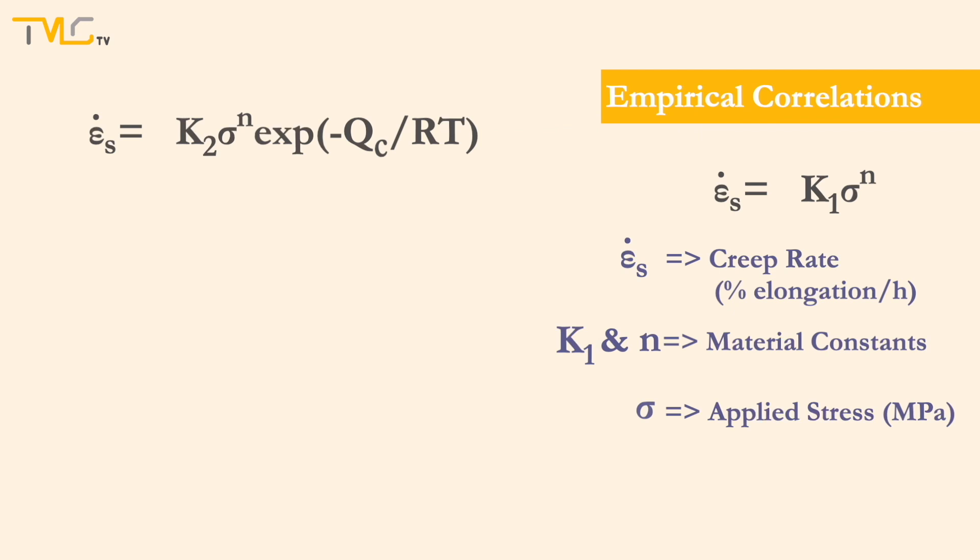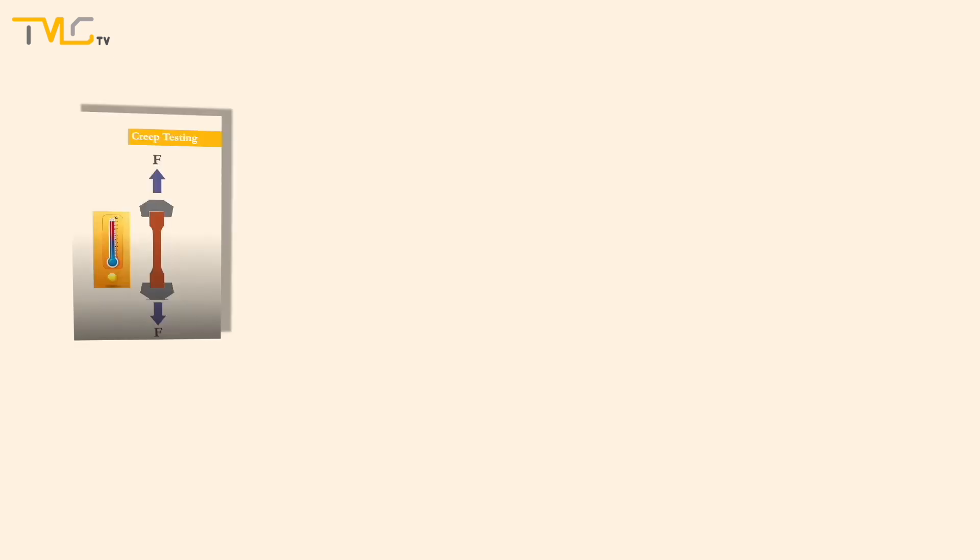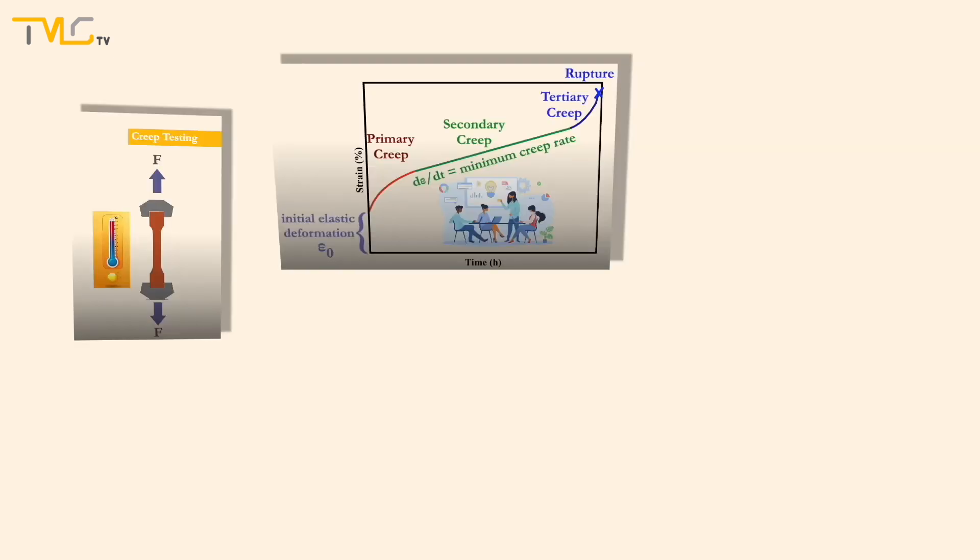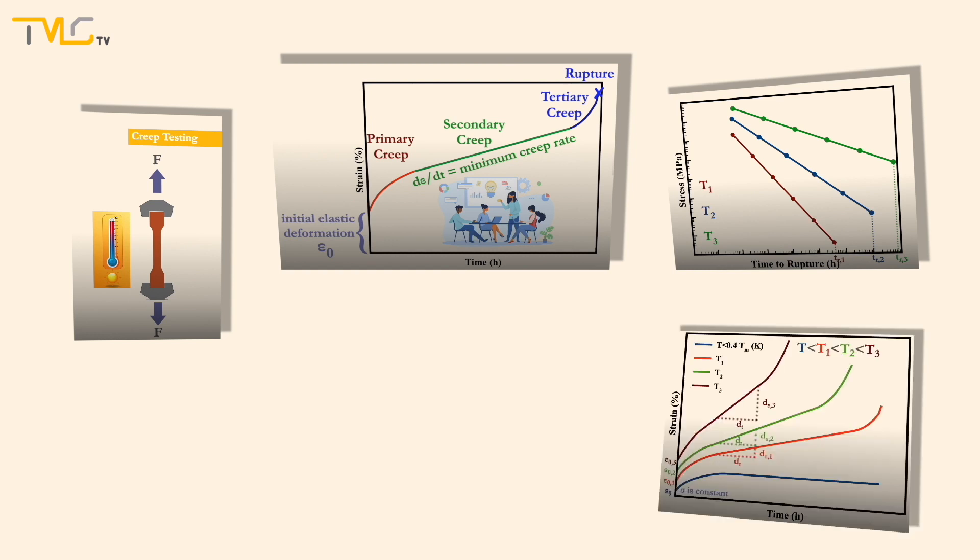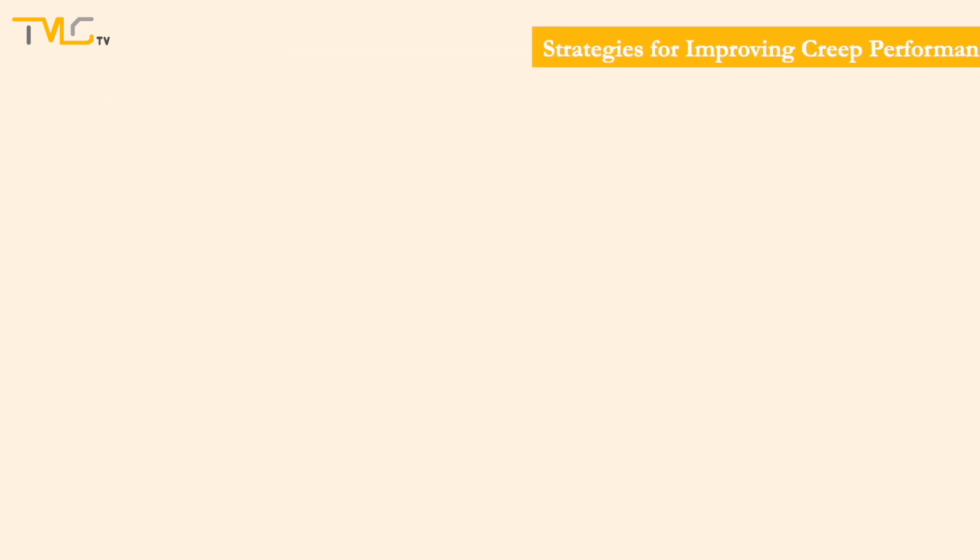Here, K2 is a material constant, Qc is the activation energy for creep deformation in kJ per kmol, R is the universal gas constant, being equal to 8.314 kJ per kmol, and T is the operating temperature in Kelvin. As we are done with creep testing, creep stages, effects of stress and temperature on creep and rupture curves, and empirical correlations, now we can move on to the strategies for improving creep performances of metals.